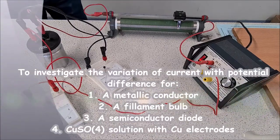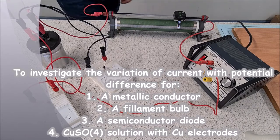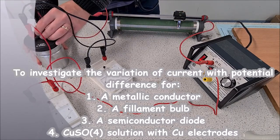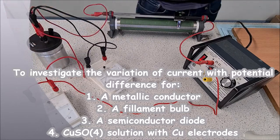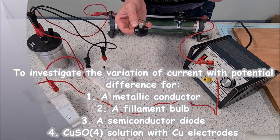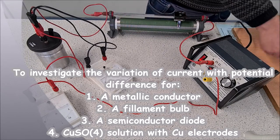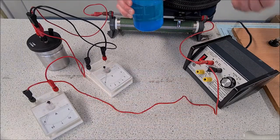This is to investigate the variation of current with potential difference for first a metallic conductor, we're going to use our calorimeter, we're also going to use a filament bulb, we're going to use a semiconductor diode, and then lastly we're going to use a copper sulfate solution with copper electrodes.